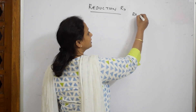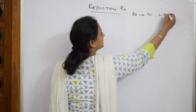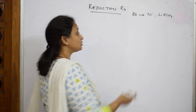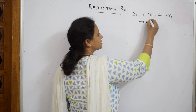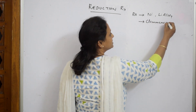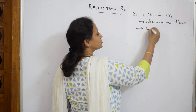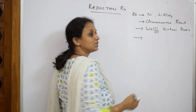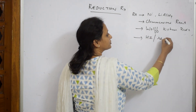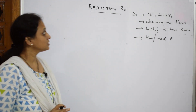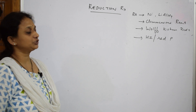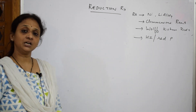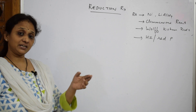Here I am going to use reducing agents like nickel, lithium aluminium hydride, and sodium borohydride. I will show how these act when added to an aldehyde or ketone. I will also show a reaction called Clemmensen reduction, the Wolff-Kishner reduction, and reduction using hydrogen iodide and red phosphorus. Please note the different reactions: reduction with nickel and lithium aluminium hydride, Clemmensen, Wolff-Kishner, and HI.